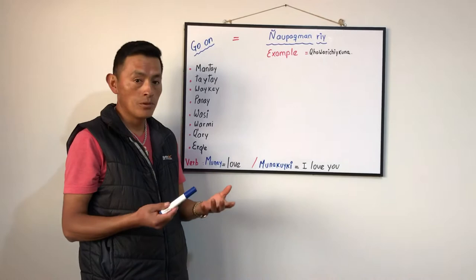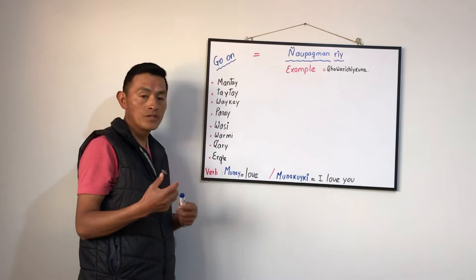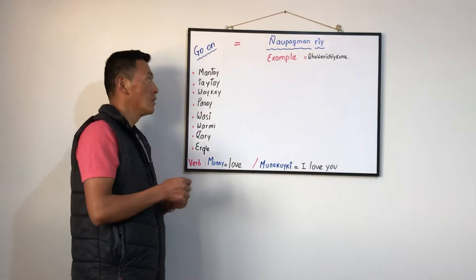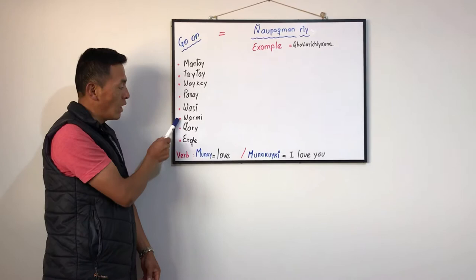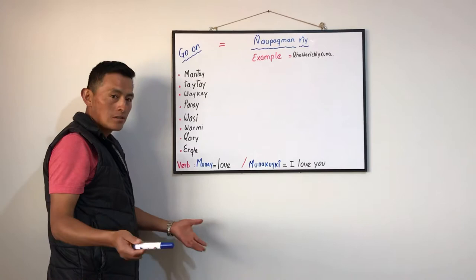We have another one. If you want to say 'I love you' in Quechua, we have to pronounce Munacuiki. Munacuiki. I have another word here: Mantai, Taitai, Waikei, Panai, Wasi, Warmi, Kari, Erekele.